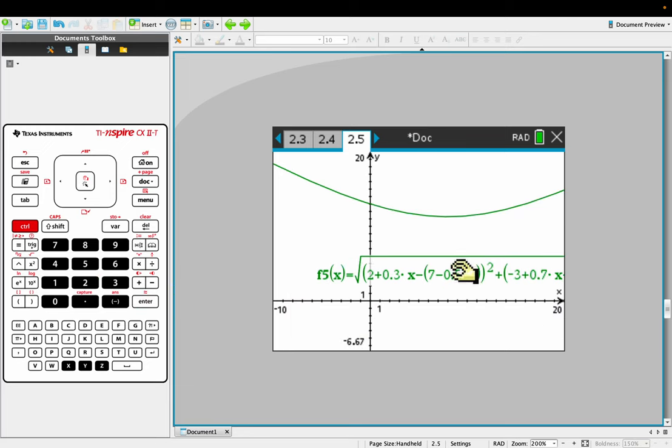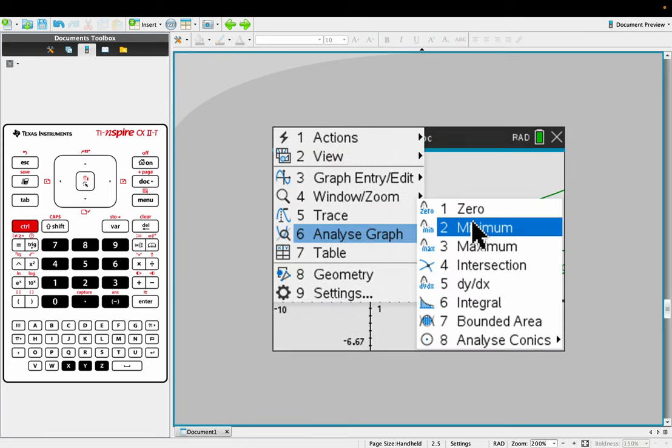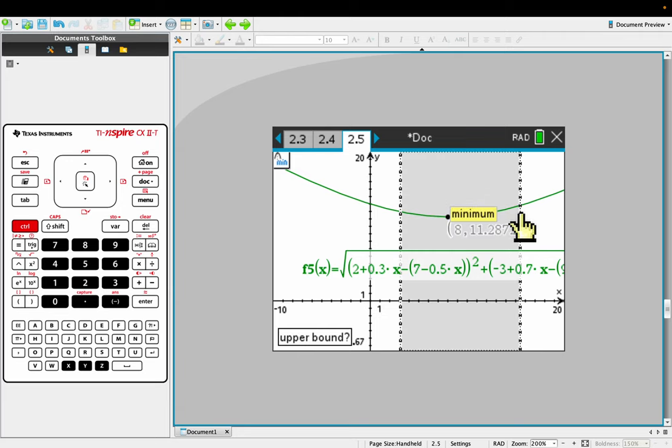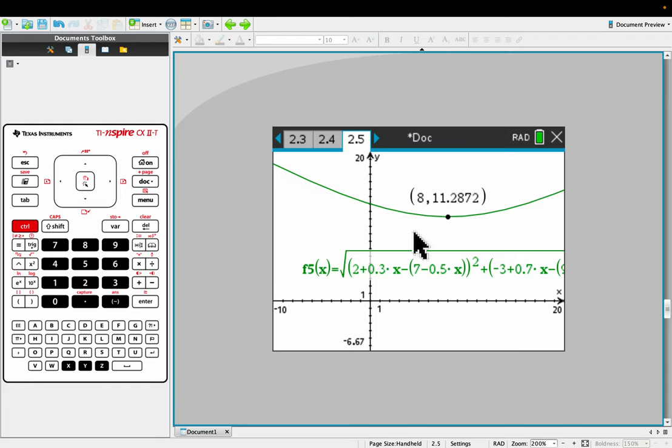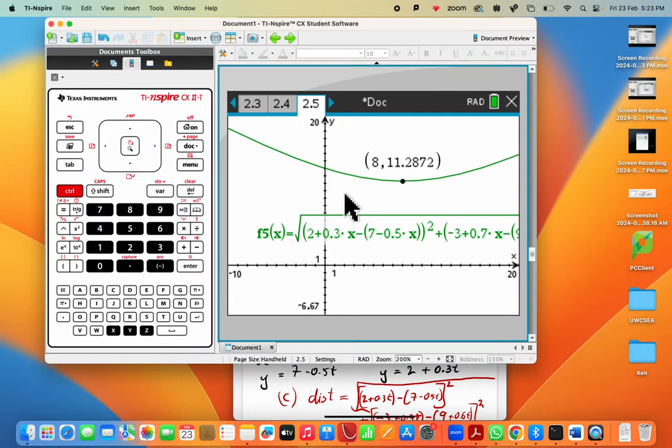And you can clearly see there's a minimum point. So menu, analyze graph, minimum. There we go. Oh, wow. Okay, so it's an exact number of seconds. After 8 seconds, they are at a minimum distance, the closest that they're going to be to each other, 11.3. So let's just go transfer all of those down to the iPad, just so we know we've got the answers all in one place.